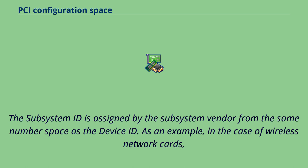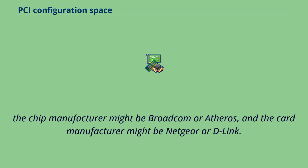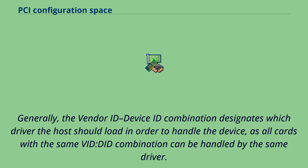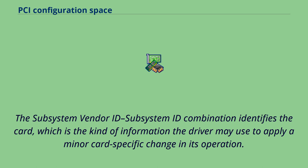As an example, in the case of wireless network cards, the chip manufacturer might be Broadcom or Atheros, and the card manufacturer might be Netgear or D-Link. Generally, the vendor ID/device ID combination designates which driver the host should load to handle the device, as all cards with the same VID/DID combination can be handled by the same driver. The subsystem vendor ID/subsystem ID combination identifies the card, which is the kind of information the driver may use to apply a minor card-specific change in its operation.